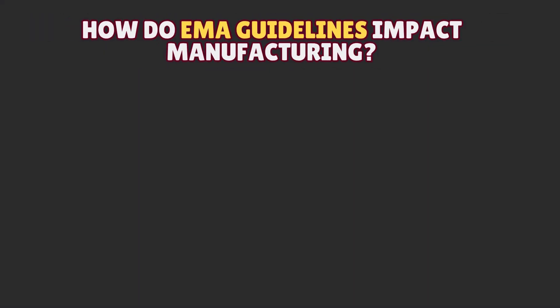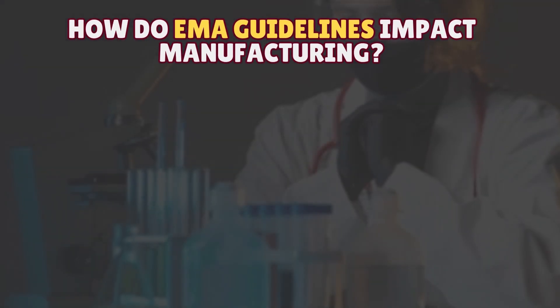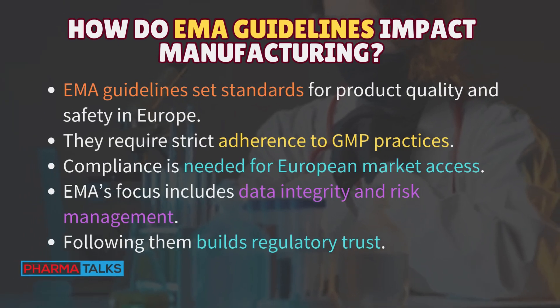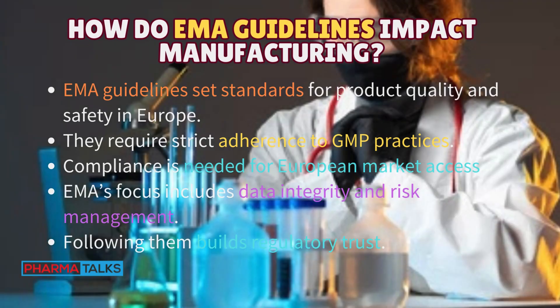How do EMA guidelines impact manufacturing? EMA guidelines set standards for product quality and safety in Europe. They require strict adherence to GMP practices. Compliance is needed for European market access. EMA's focus includes data integrity and risk management. Following them builds regulatory trust.